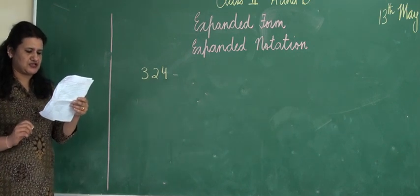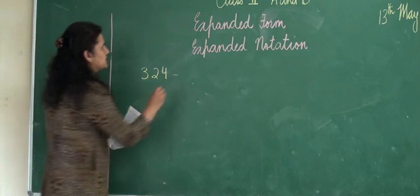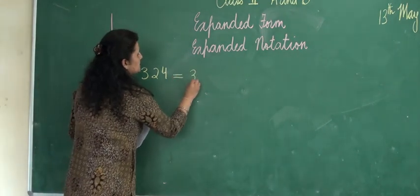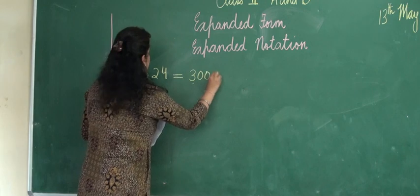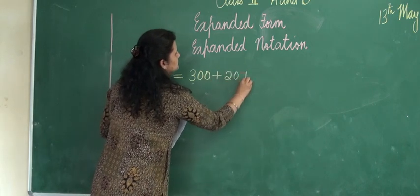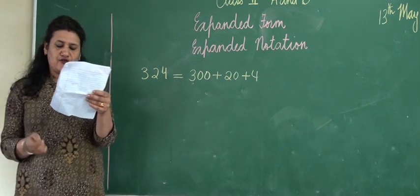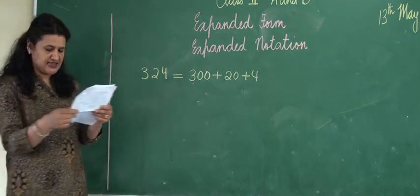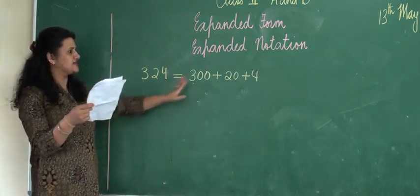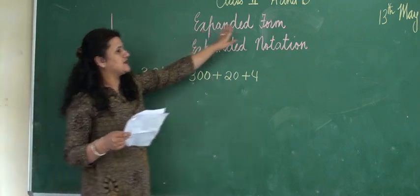So now we are going to stretch the number. To stretch the number, the expanded form, we are going to write 300 plus 20 plus 4. Now listen boys, don't forget to put the addition sign to make the math statement correct.